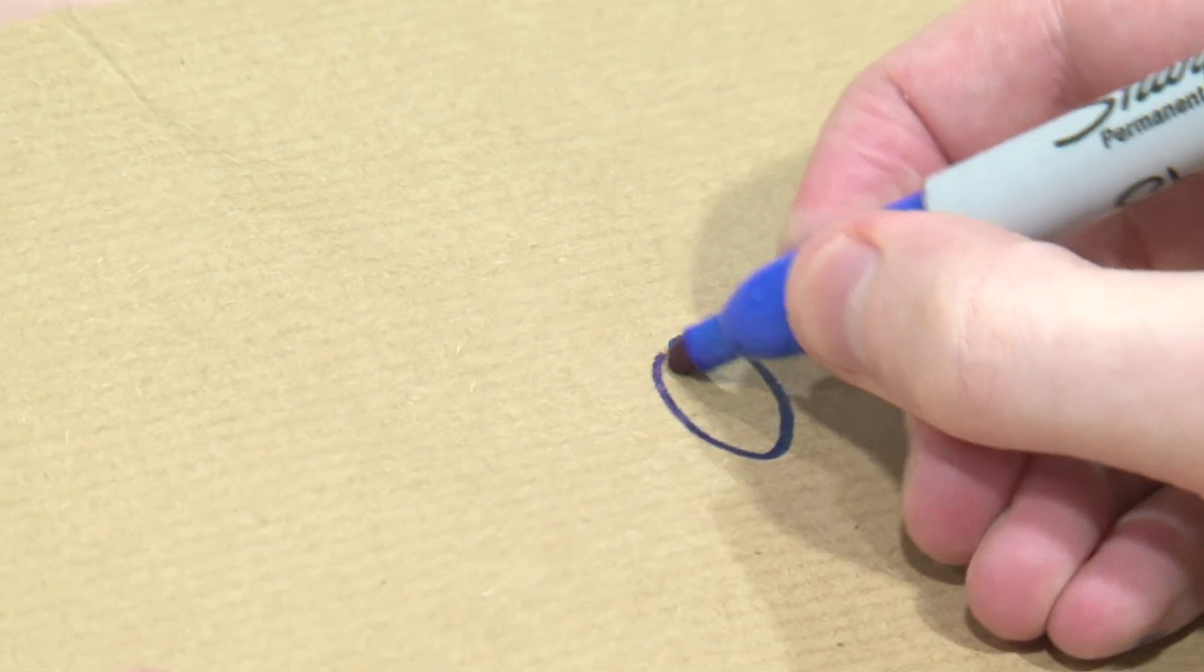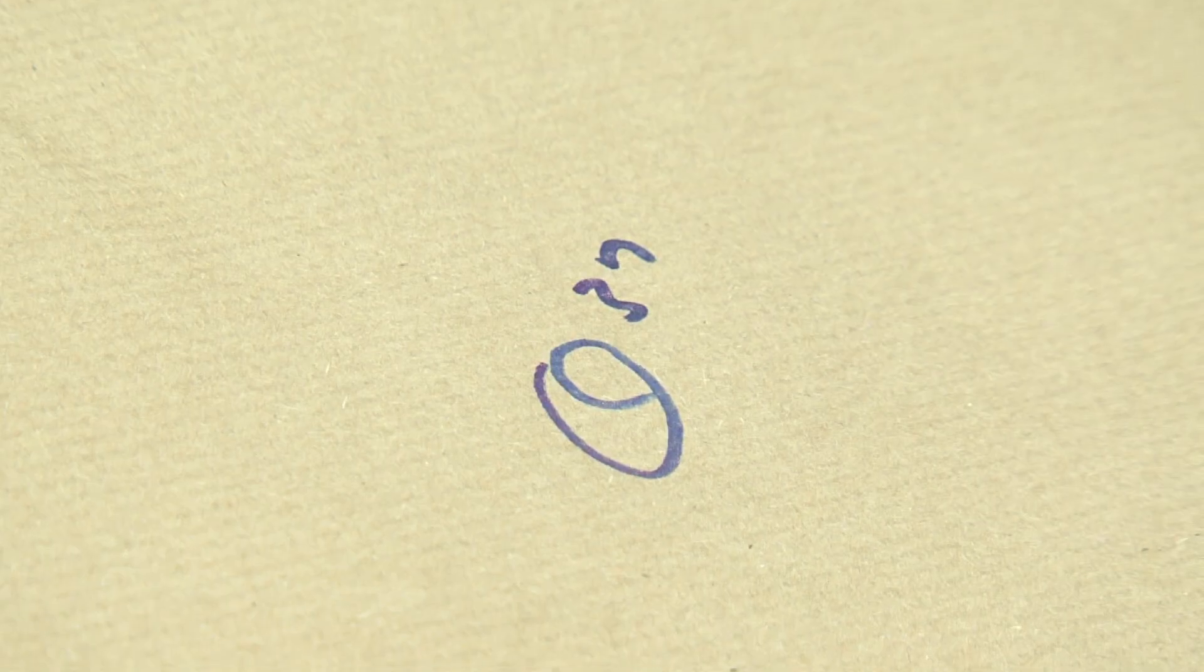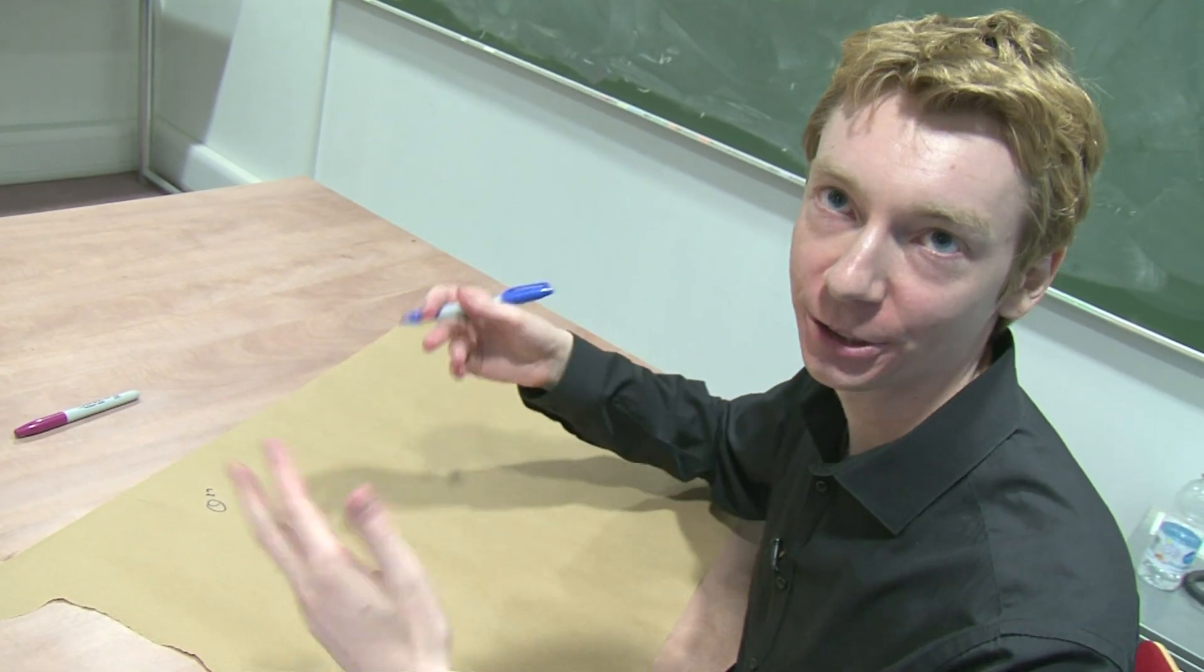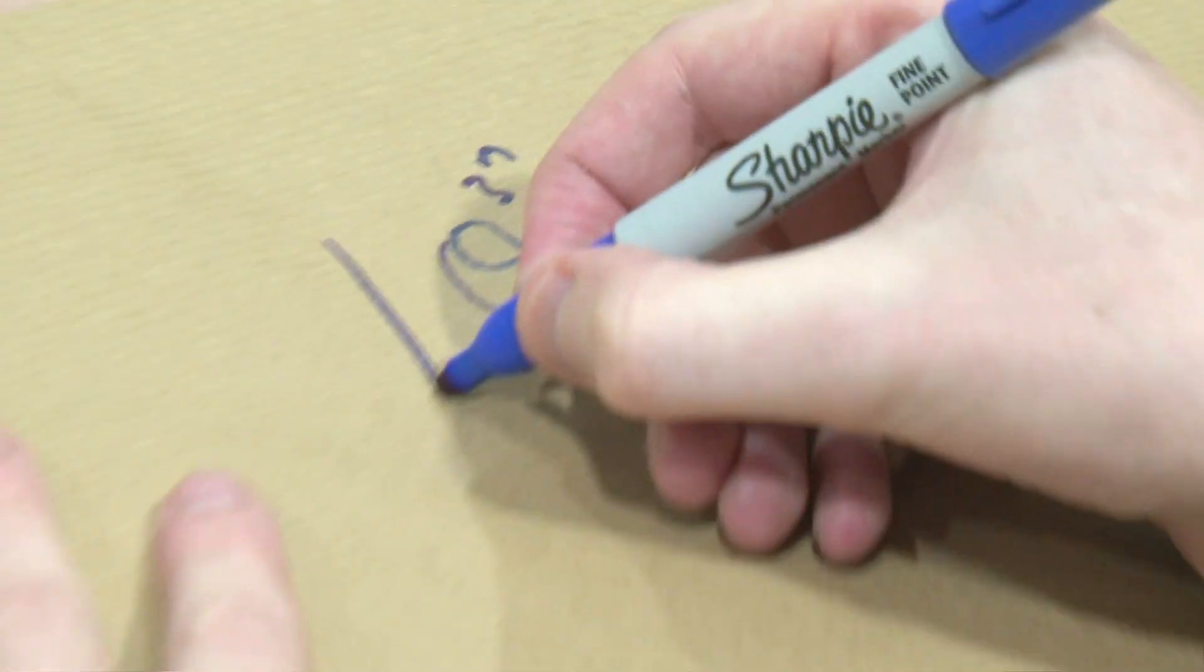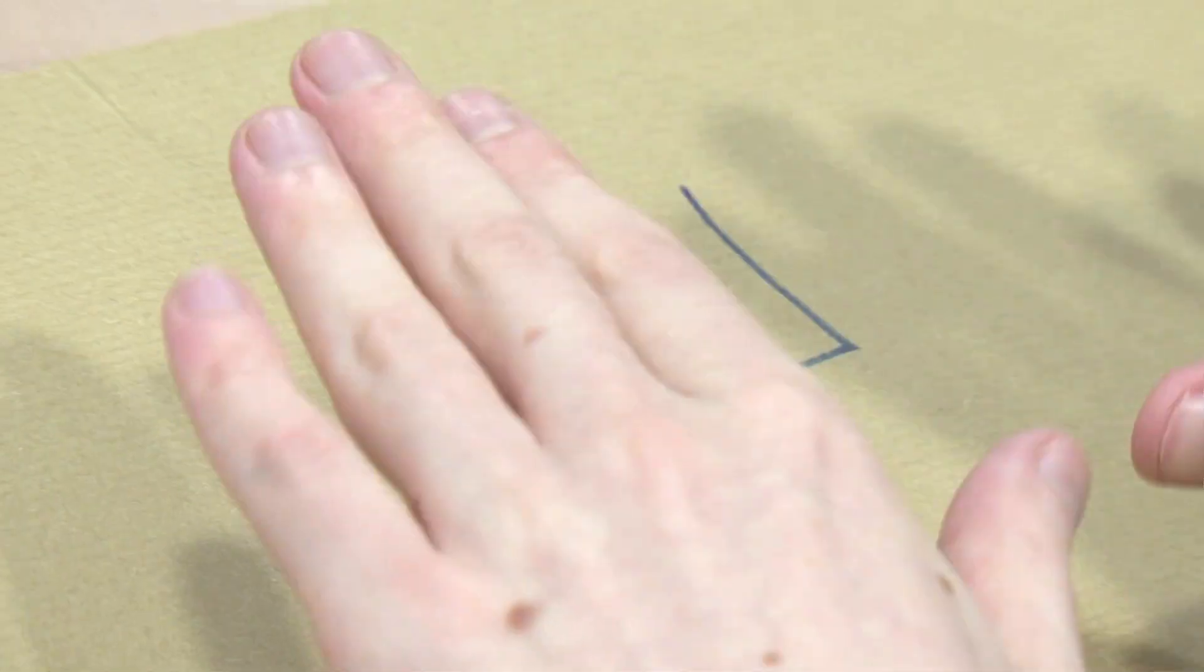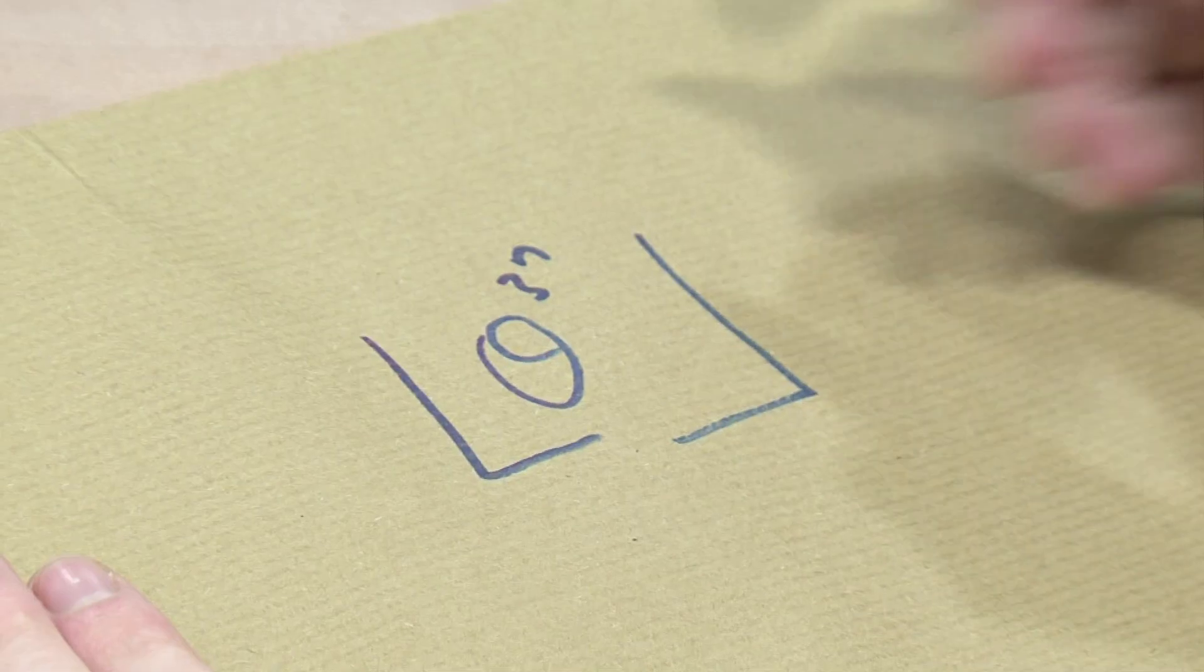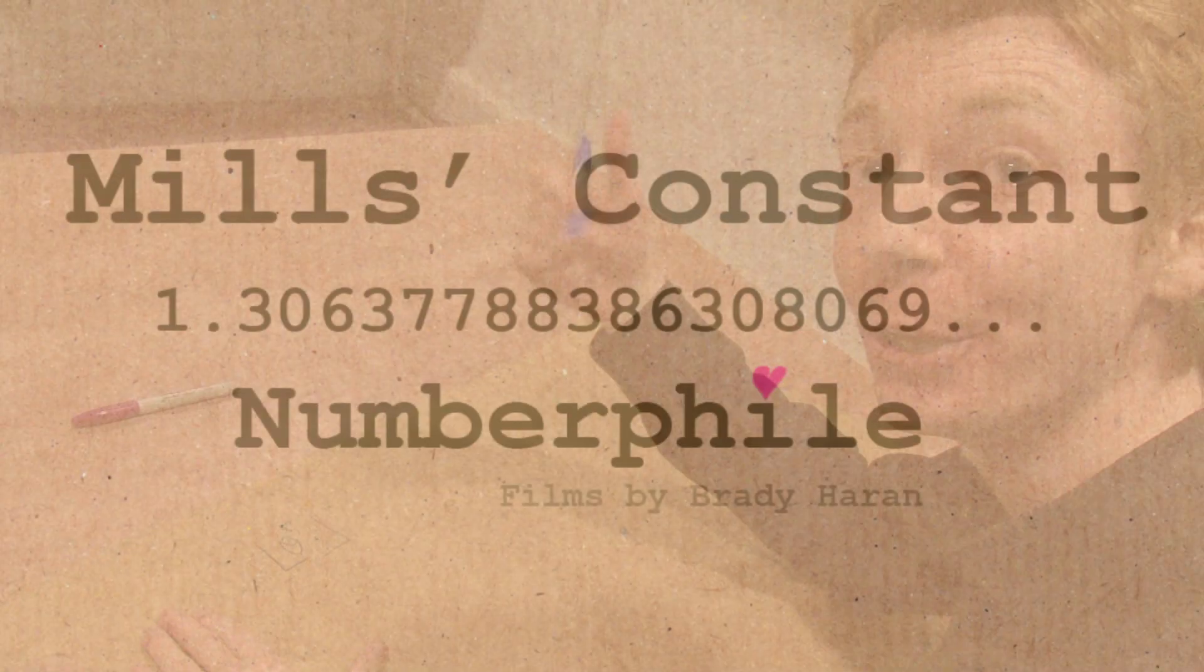He said there exist numbers, which we're going to call theta, the Greek letter theta, where you raise it to the power 3 to the power n. And you actually then have to round it down, that gives you fractions, so you round it down to the nearest whole number, which you write like this. That's the symbol for rounding it down. There exists a number like this that will always give you primes for every value of n. So you might have n equals 1, n equals 2, n equals 3, and every value is a prime.